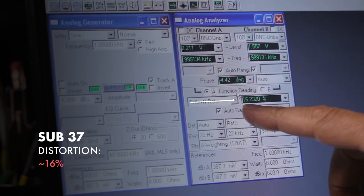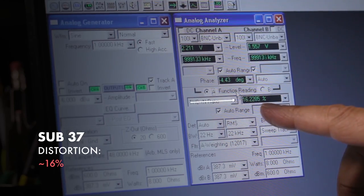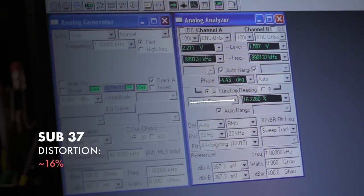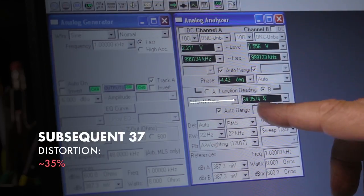You can see here that the distortion of the Sub-37 Tribute Edition is around 16%, but if I switch over to the Subsequent 37, the distortion is around 35%.